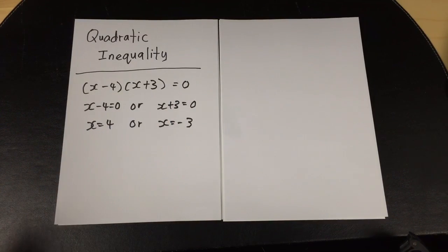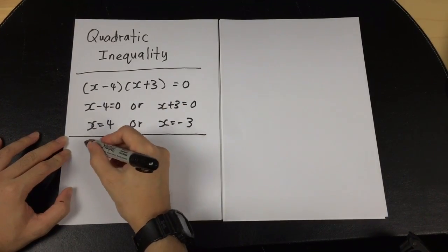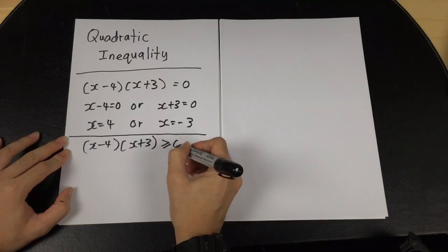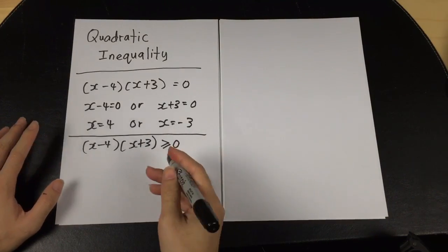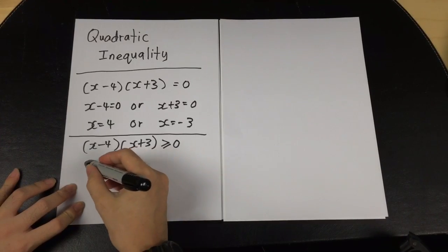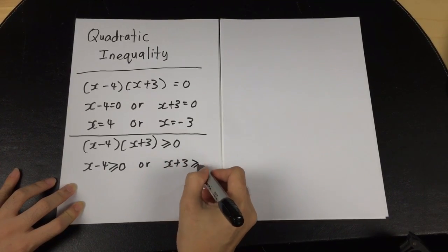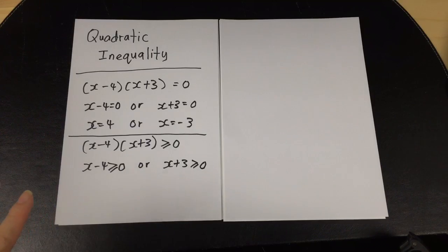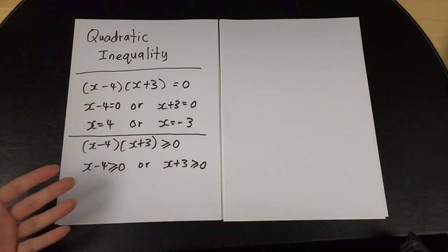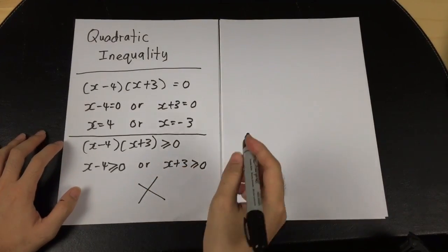For example, if I say (x - 4)(x + 3) ≥ 0, when I mark the exam paper one of the most common mistakes is that students will say x - 4 ≥ 0 or x + 3 ≥ 0, because they are used to the way they do quadratic equations. When you do like this, only one of your answers will be correct — it's impossible both are correct — because the way you are doing inequality for quadratic is wrong.